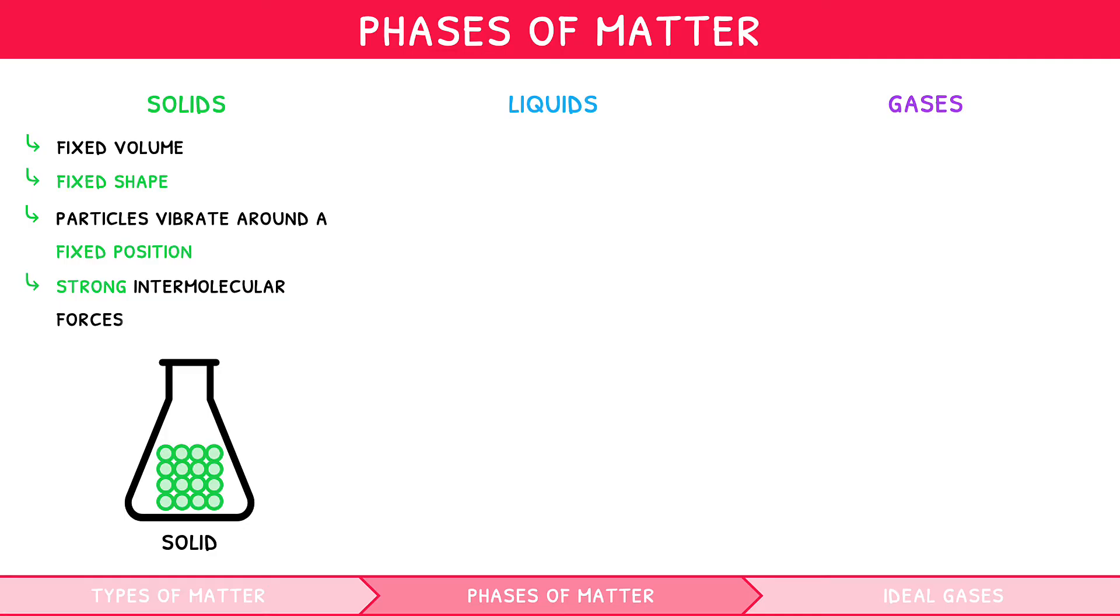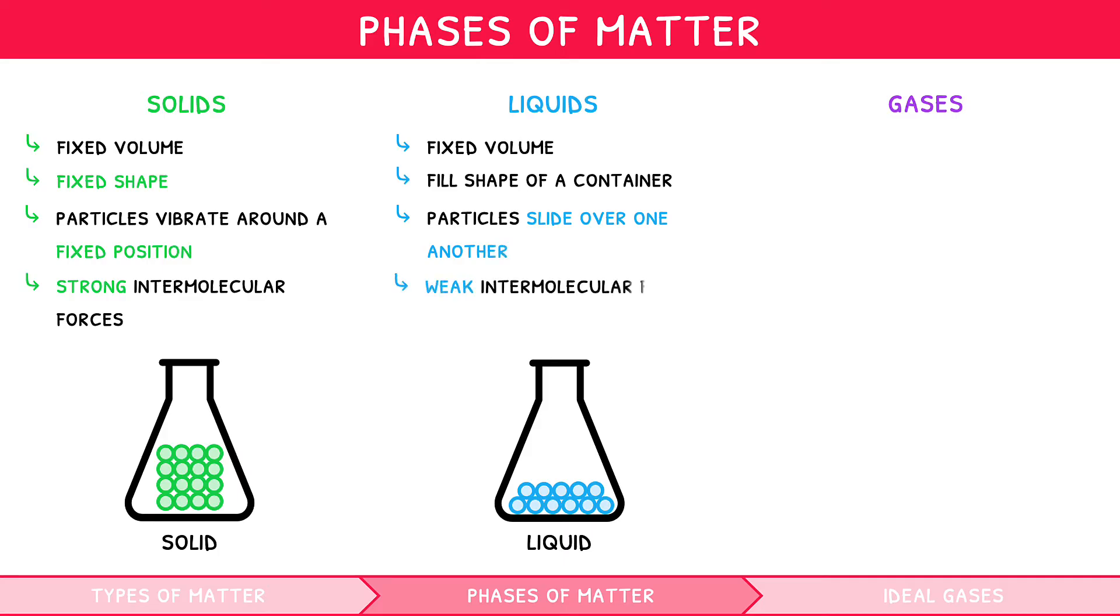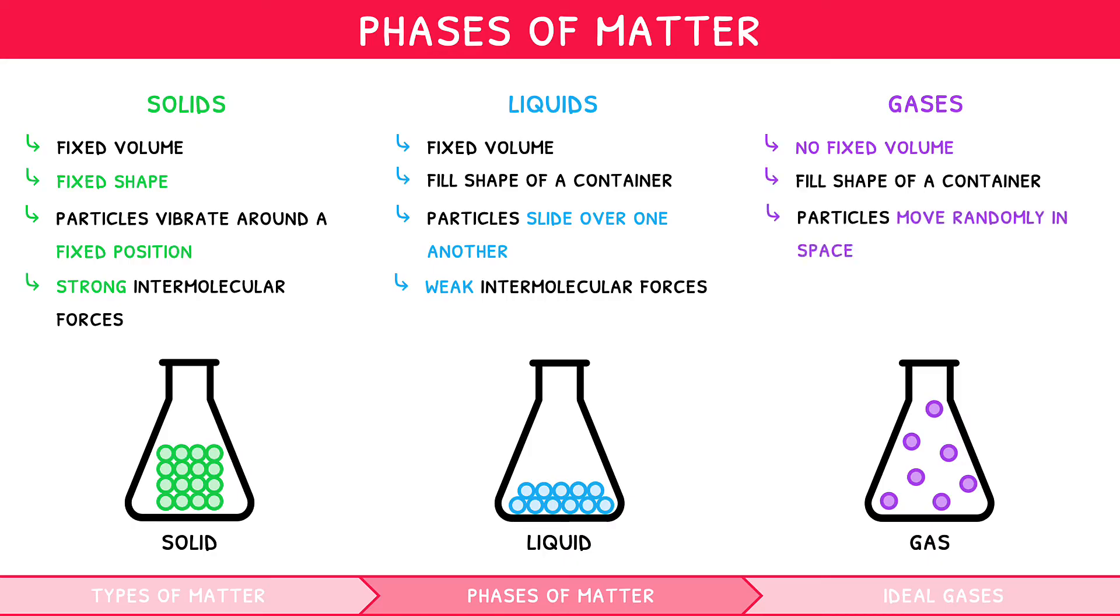Liquids can be defined as having a fixed volume, but a variable shape, and as such they do fill the shape of a container. The particles slide over one another due to weak intermolecular forces between the particles. Gases can be defined as having no fixed volume and a variable shape, and as such they also fill the shape of a container. The particles move randomly into space due to very weak intermolecular forces between the particles.